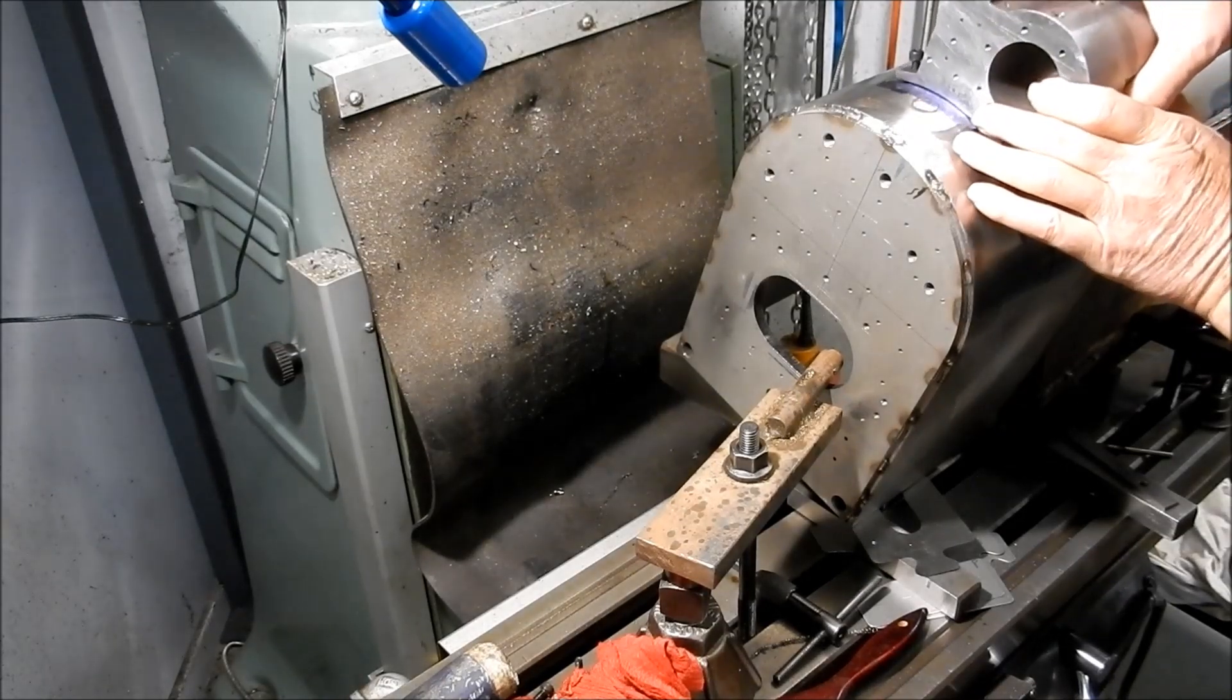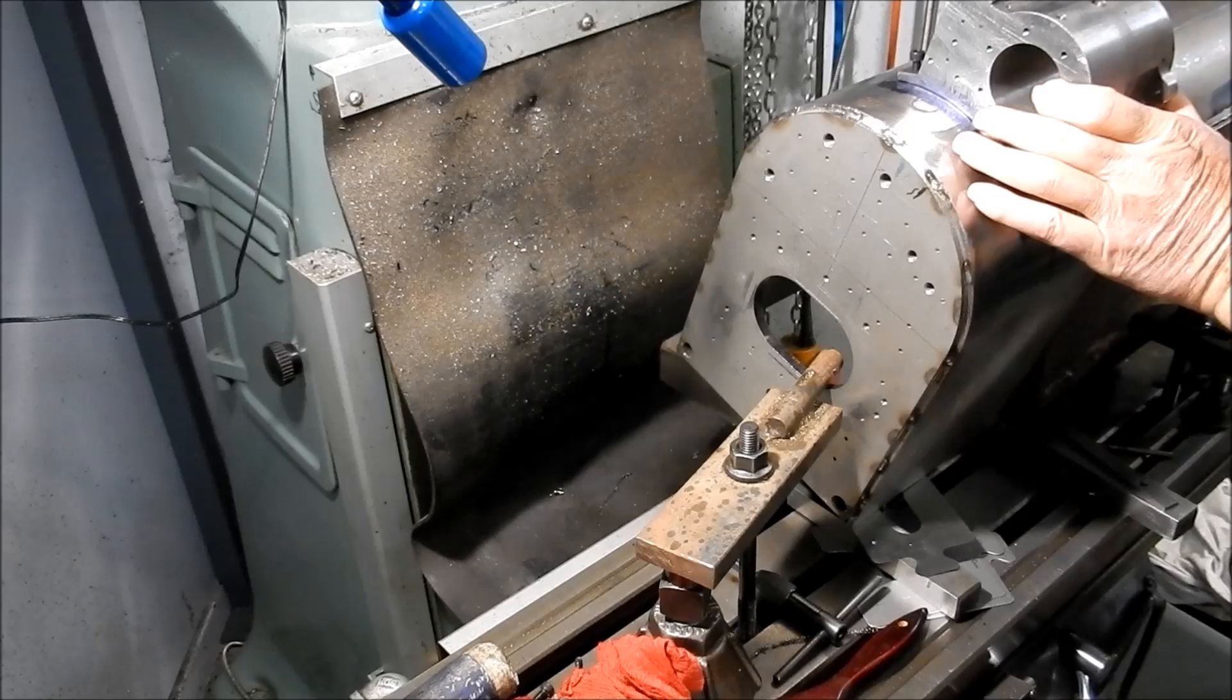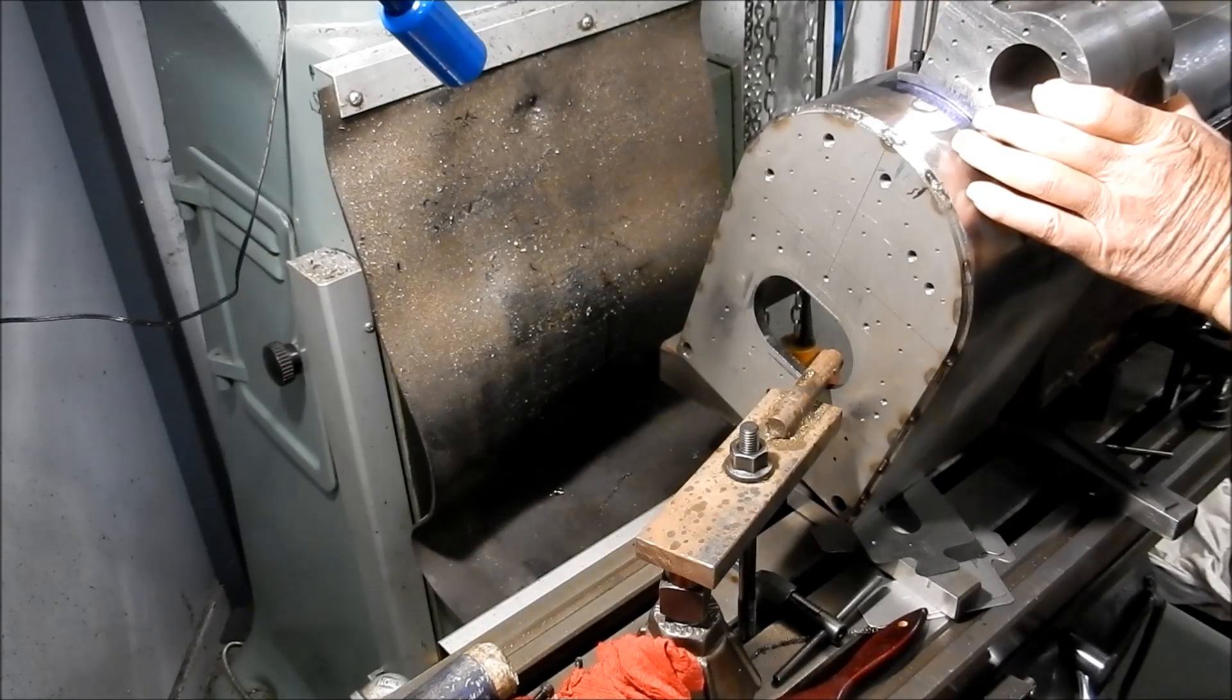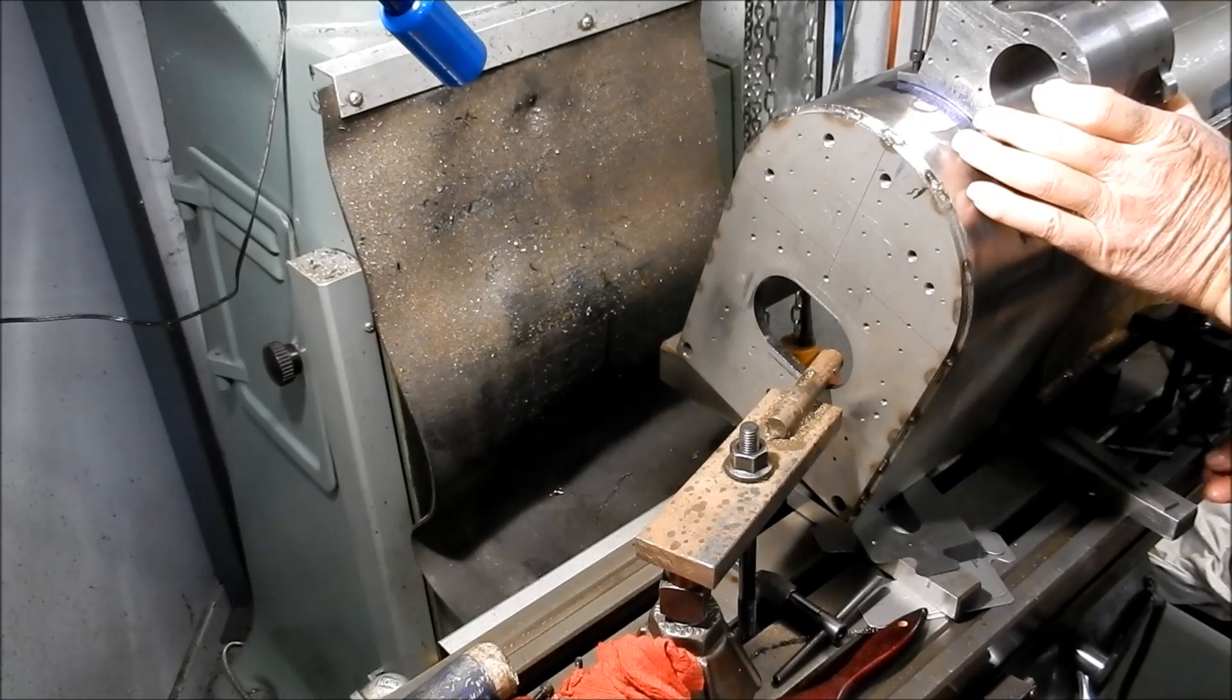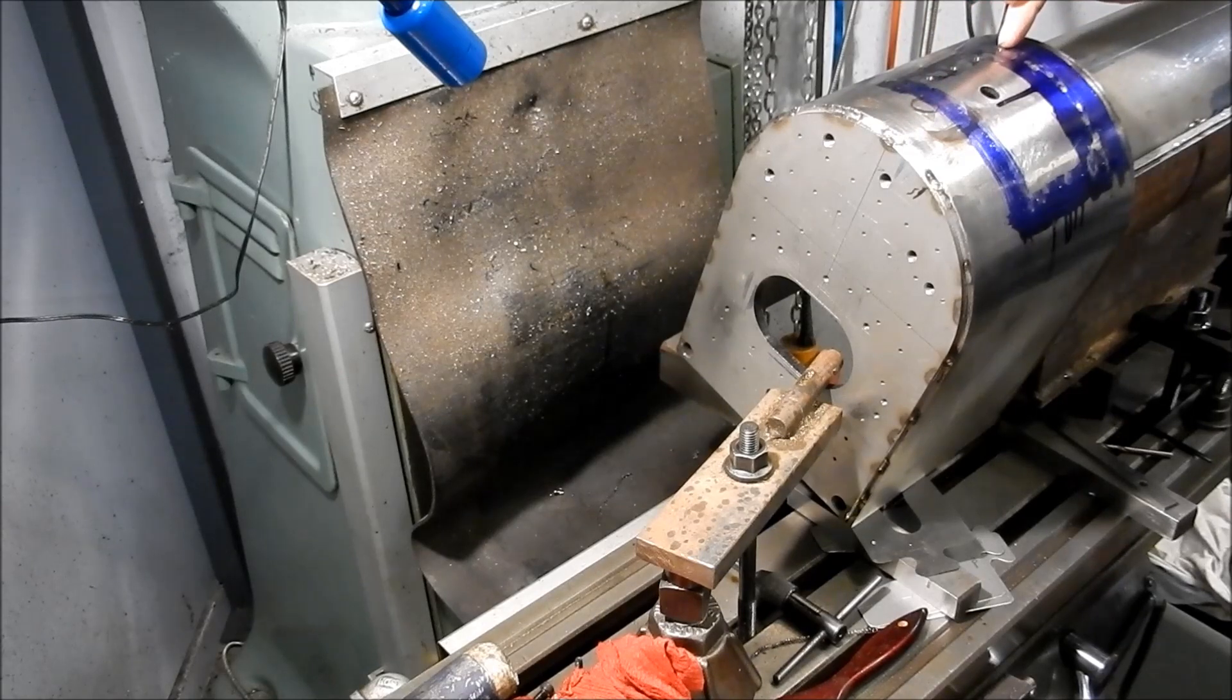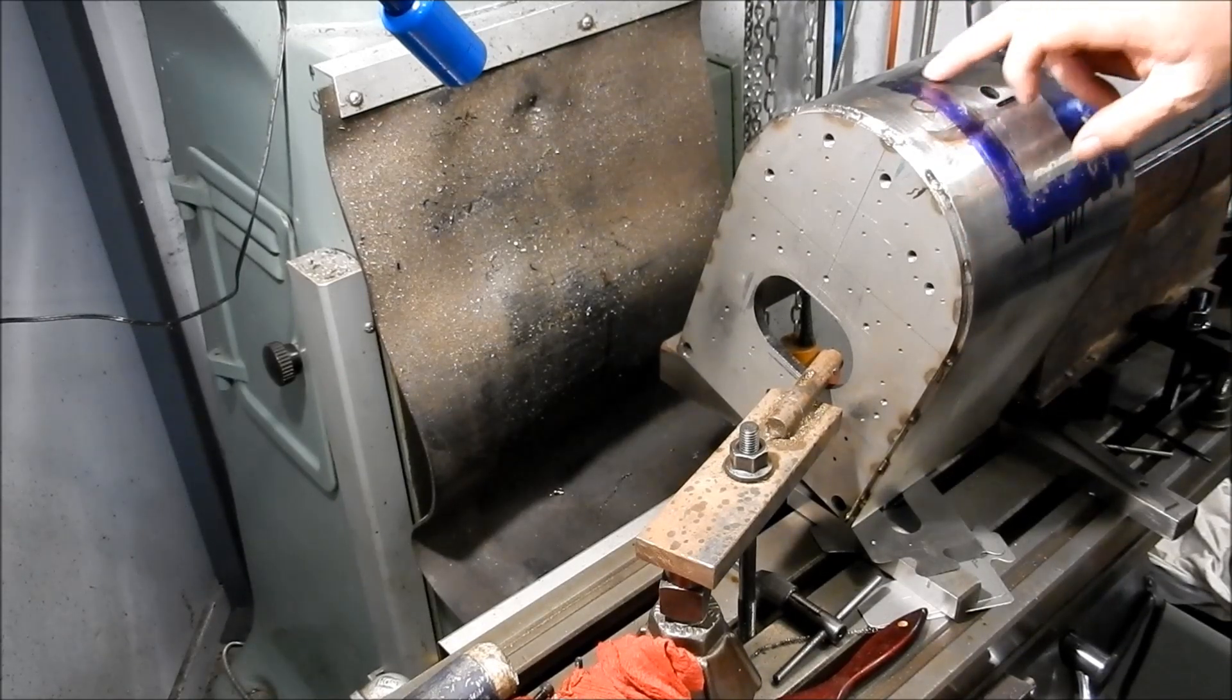I stuck it down and was able to use my transfer punch—five mil transfer punch—come through and punch each of those holes. So the row across one side and a row down the other side. I've already drilled and tapped these ones.